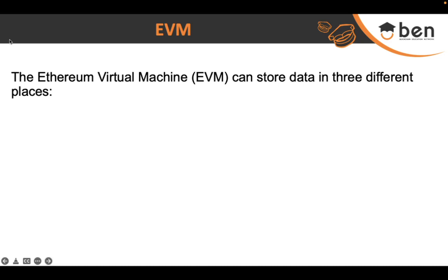As we discussed in the very first lesson, the EVM is basically a stack machine — a low-level, sandboxed machine where you deploy your code and cannot access it directly. All the variables you use, whether local variables, state variables, or other data, are used by the EVM and stored in multiple places. The EVM can store data in three different places: storage, memory, and stack.